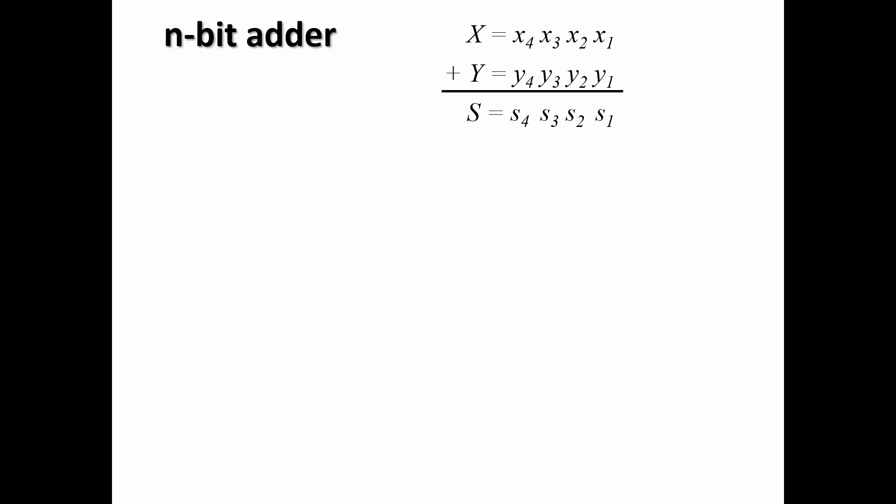So an n-bit adder can be a set of full adders connected in series. Full adder, full adder, full adder, and full adder. So we have 4 bits that we need to add, and so we can put for example 4 full adders.